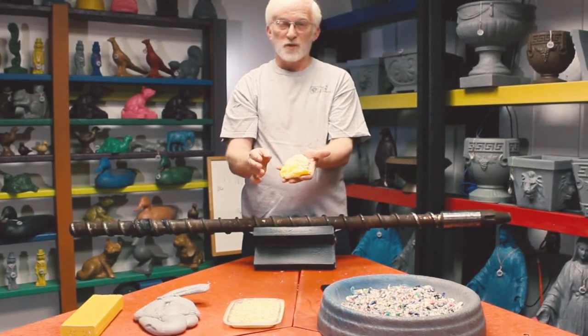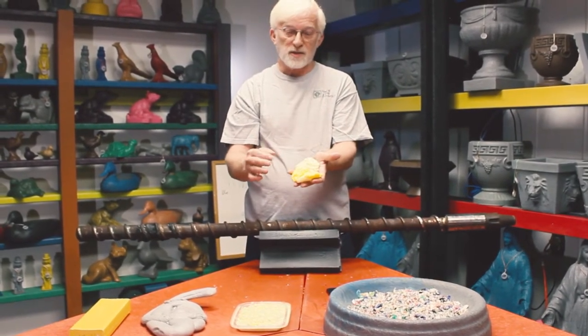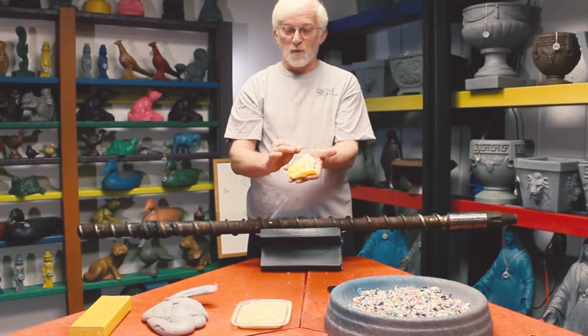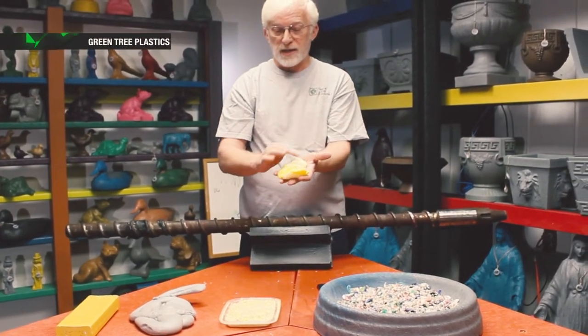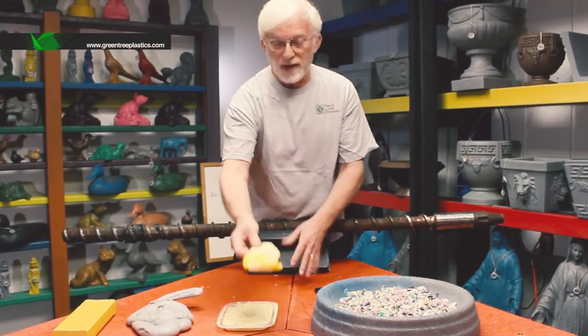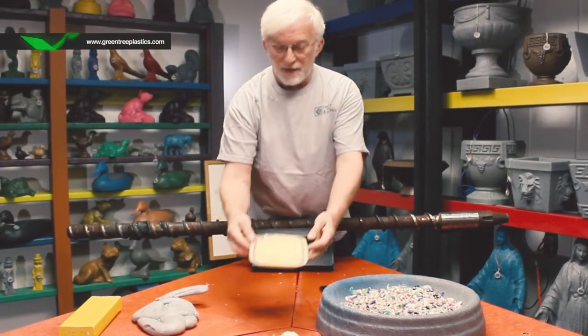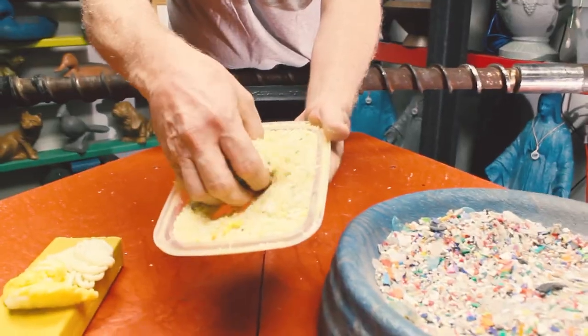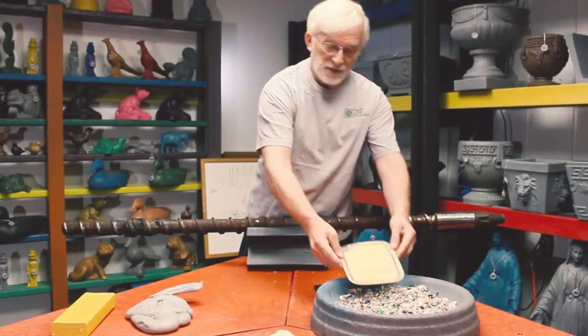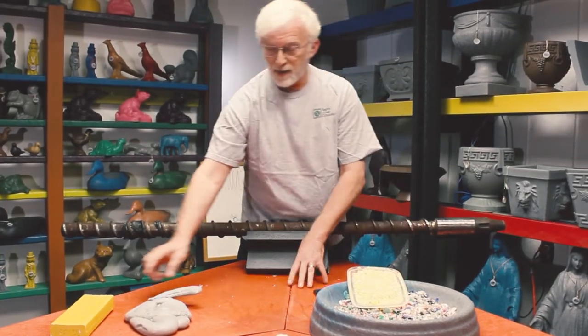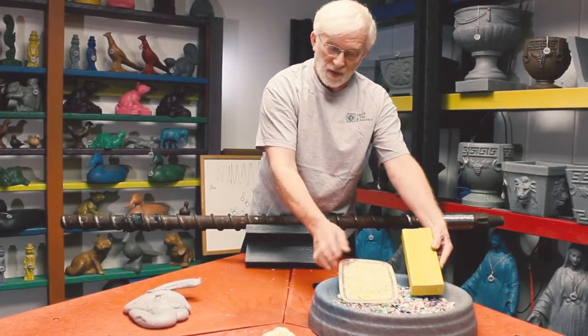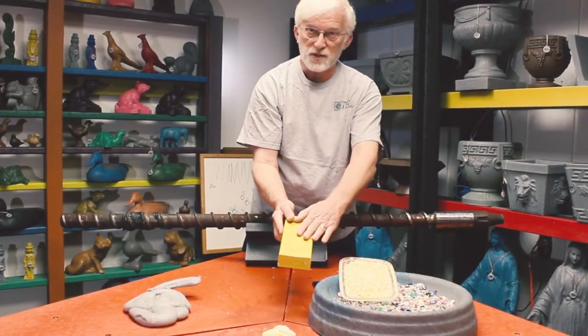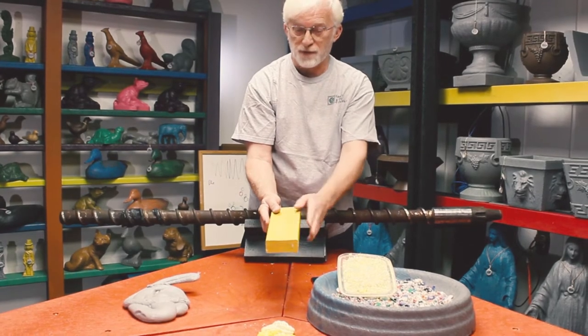So when you go to the store and you buy something that's orange, they've taken raw plastic and added this color to it. And so what we do is we take those purges, we shred them and we grind them up very fine, just like this little tray here, and then we add these to your caps and the color that the purge was makes your colors that you have for your benches.